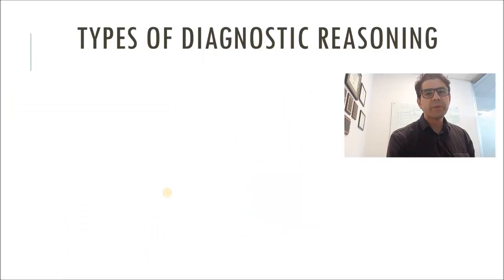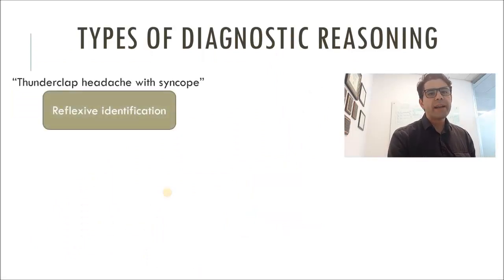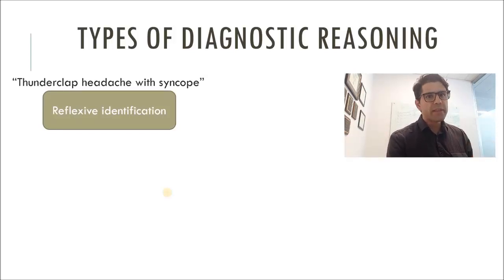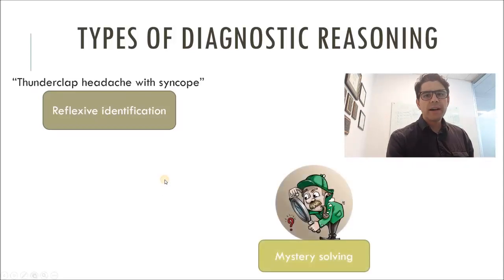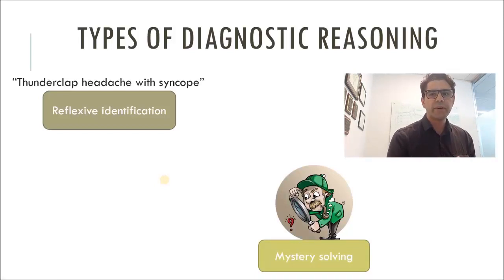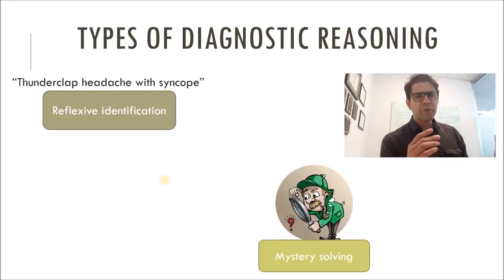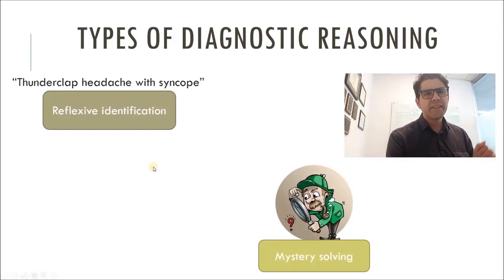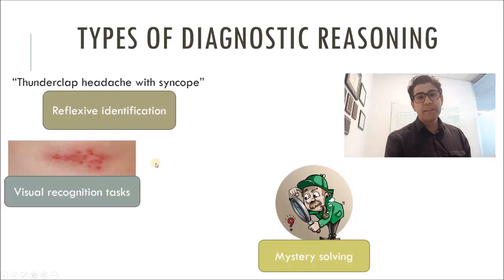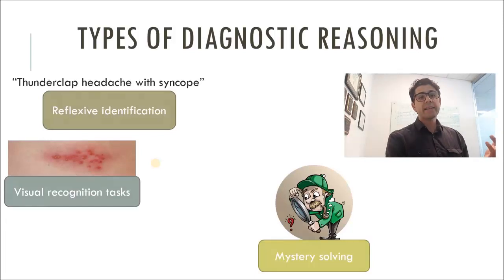When we talk about diagnostic reasoning, we talk about a lot of different things. One type is simply reflexive identification — if somebody comes in with a thunderclap headache with syncope, my brain is already thinking subarachnoid hemorrhage. We also talk about mystery solving, where somebody comes in with an abstract complaint and we're gathering data and reprioritizing our differential diagnosis. For example, somebody comes in with altered mental status and seizures, and on exam they have dilated pupils, tachycardia, hypertension, and a tremor — and we start thinking through diagnostic possibilities. Another type is what our colleagues in dermatology and radiology do: visual recognition tasks.